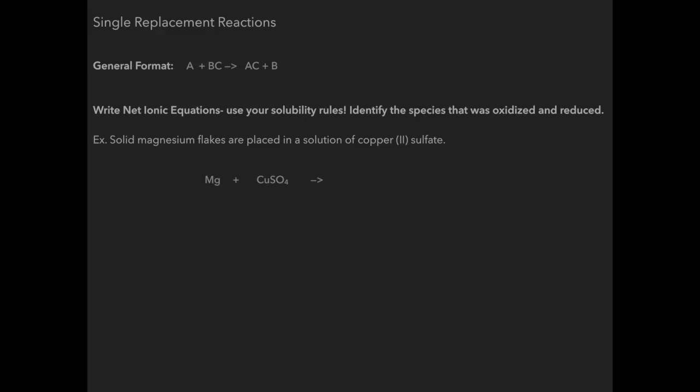So magnesium kicks out copper to form a compound with sulfate so it would be MgSO4 and then copper is by itself. Notice magnesium on the reactant side and copper on the product side do not have a charge and that is key here. This is why it's an oxidation reduction reaction. If instead of magnesium I had fluorine for example F2, F would have kicked out SO4 because those are both negatively charged when they're ions.